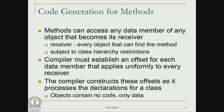Now, how do we generate machine code for methods? Methods can access any data member of any object that becomes its receiver, subject to class hierarchy restrictions. There is a basic requirement from the compiler: the compiler must be able to establish an offset for each data member that applies uniformly to every receiver. The compiler can construct these offsets as it processes declarations for a class. Objects contain only data — they do not contain any code.